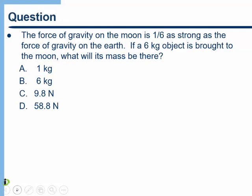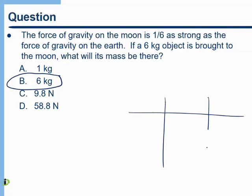Try this question. The force of gravity on the Moon is one sixth as strong as the force of gravity on the Earth. If a six kilogram object is brought to the Moon, what will its mass be there? Okay, well hopefully you got this one right. The correct answer is six kilograms. Here we have to be careful about identifying what we were given. This again is why I keep stressing that idea of making sure you understand the quantity, the symbol, and the unit of everything we look at.